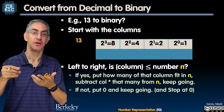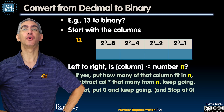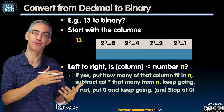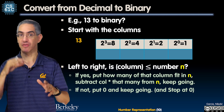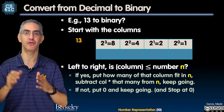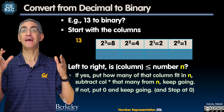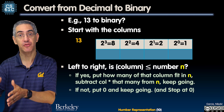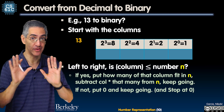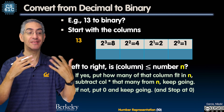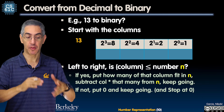Now hexadecimal — base sixteen. You have sixteen digits, and you'll probably use the first ten from decimal. Then you leak into the letters A through F. A is ten, B is eleven, C is twelve, D is thirteen, E is fourteen, F is fifteen. Please memorize that — I'd like all graduates to know how to connect that.